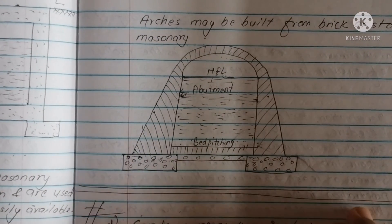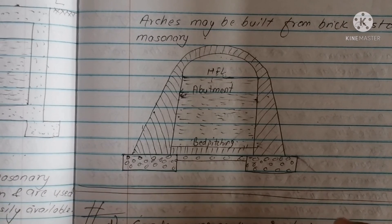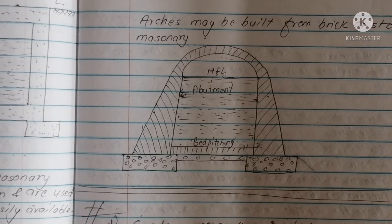This covers the types of culverts — pipe culvert, box culvert, slab culvert — and their definitions. This concludes Lecture 1 on culverts. Thank you.